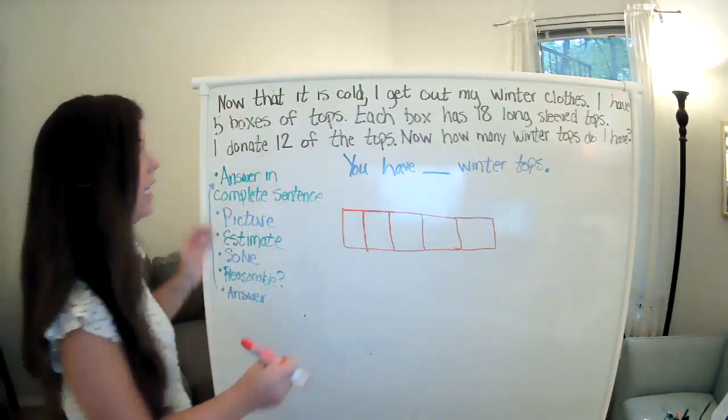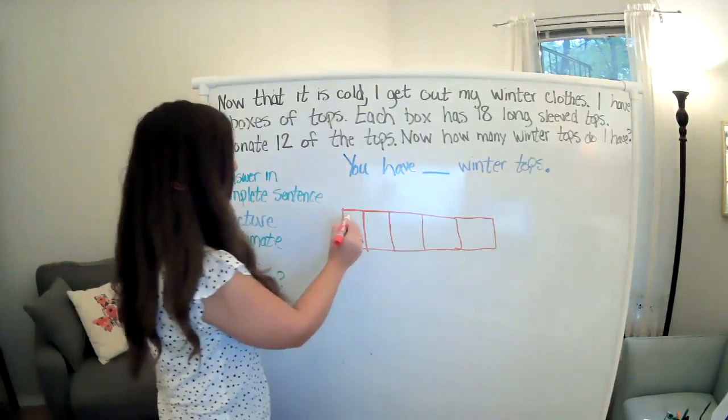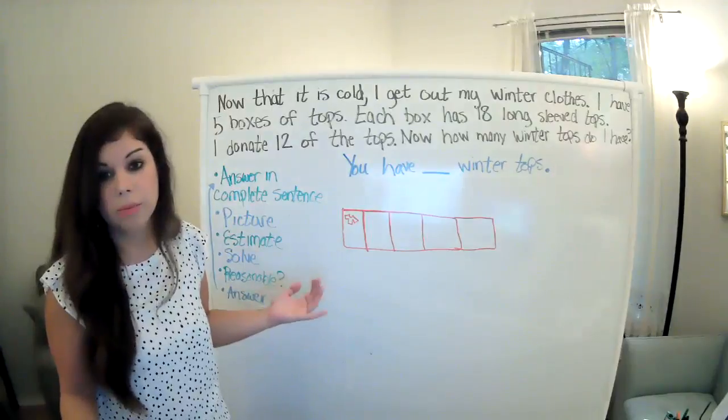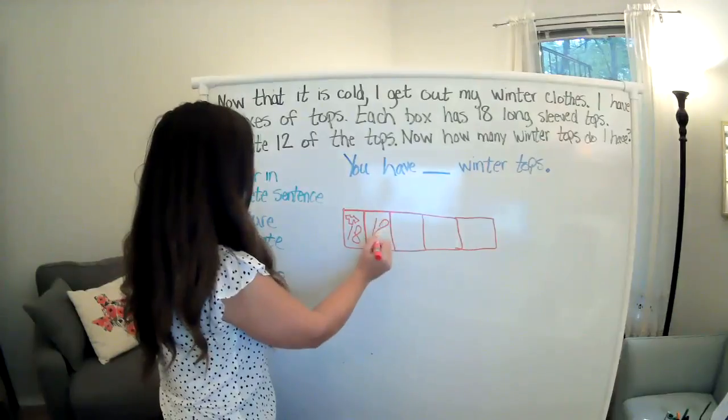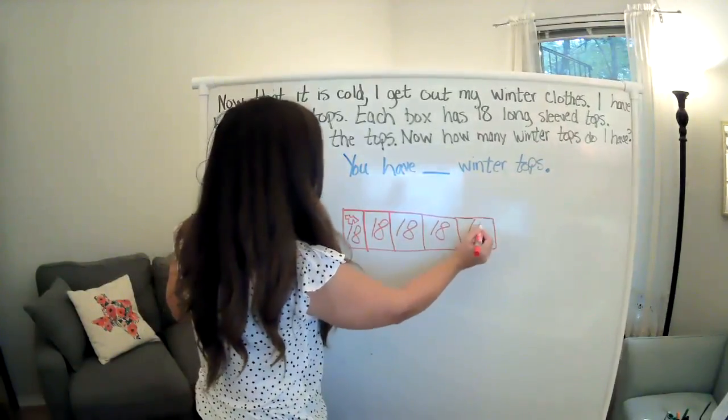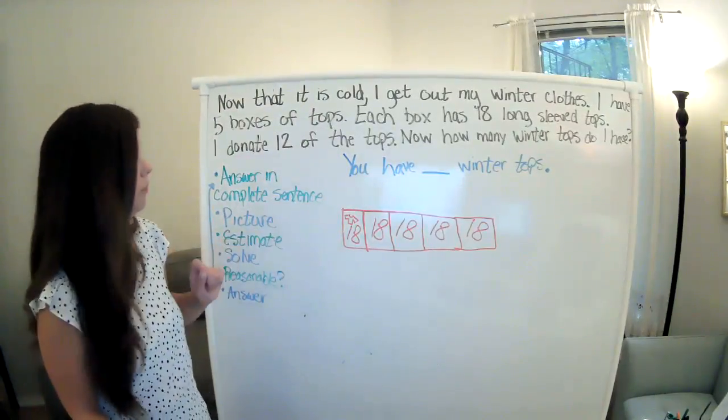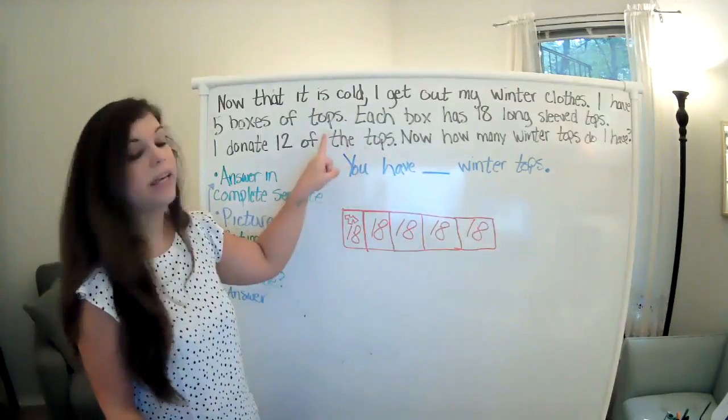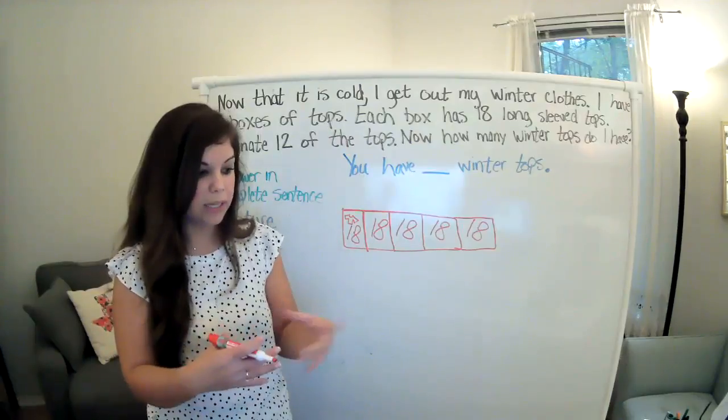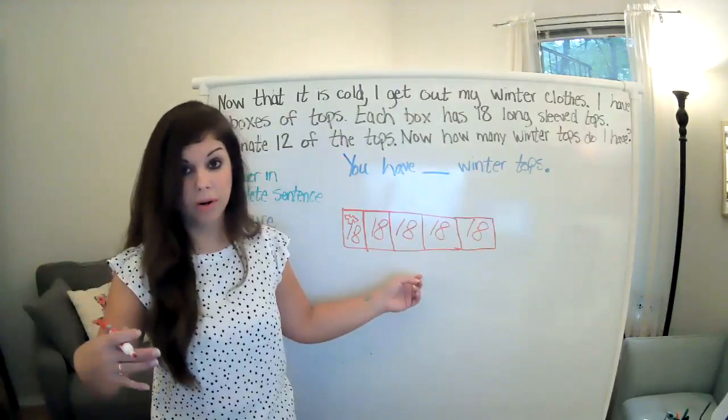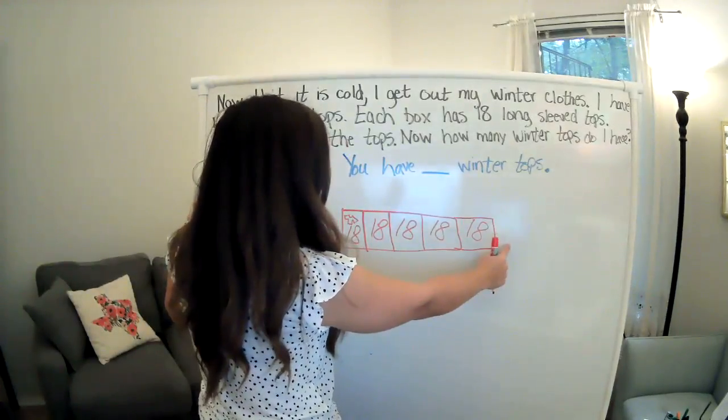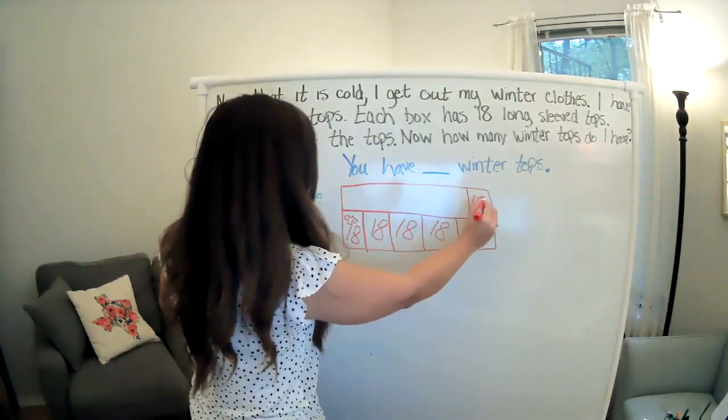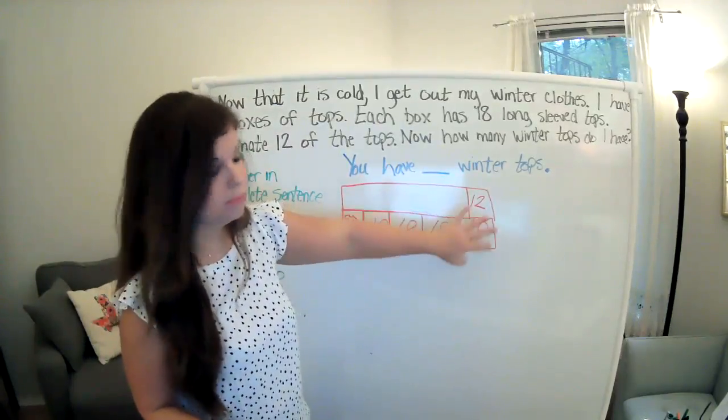It says each box has 18 long sleeve tops. Now, I do not want to spend the time to draw 18 long sleeve tops. That will take forever and it won't help me solve the problem. So I am just going to write the number 18 because that still helps me figure out what I need to do without taking all the time to draw the picture. Then it says I donate 12 of the tops. So I'm thinking about my picture and I'm thinking about what's happening in the story. If I'm donating some of these tops, I'm getting rid of them. I am not getting more. So I am not going to put a 12 here. I'm going to take my total here and I'm going to take 12 away from that total because I know that I am getting those 12 tops from inside here.